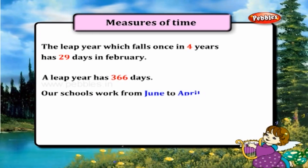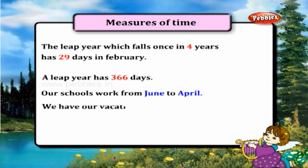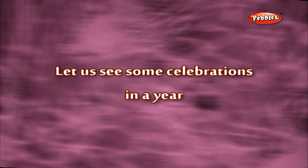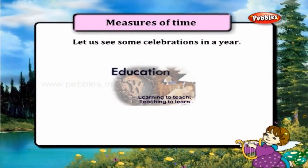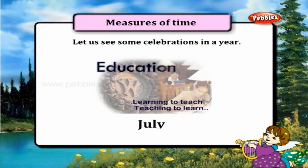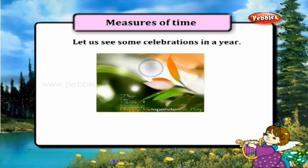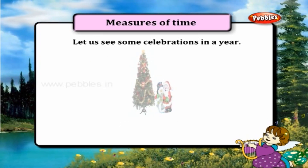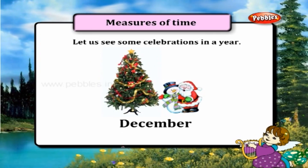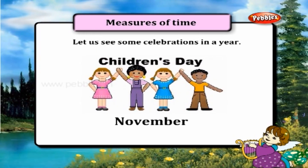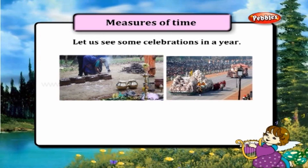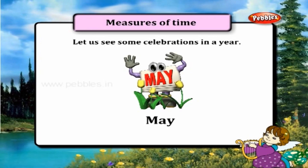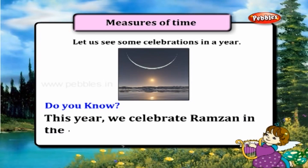Our schools work from June to April. We have our vacation during May. Let us see some celebrations in a year: Education Development Day is in July, Independence Day is in August, Teacher's Day is in August, Christmas is in December, Children's Day is in November, Pongal and Republic Day are in January, vacation is in May, and this year we celebrate Ramzan in the month of August.